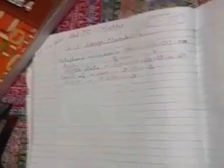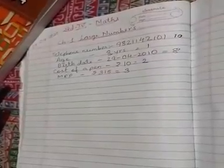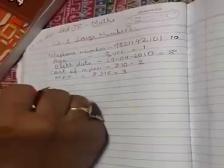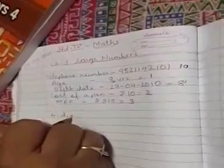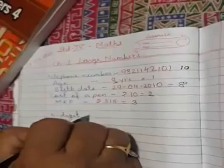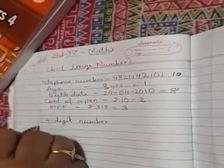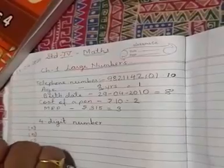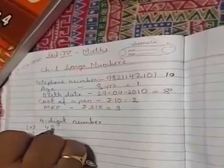So today we are talking about large numbers. Our chapter starts with large numbers. In this, we have to study 5 digit number, 6 digit number, 7 digit number. First, we will start with 4 digit number. Quickly, we will recap with 4 digit number. Last year you have studied this 4 digit number.